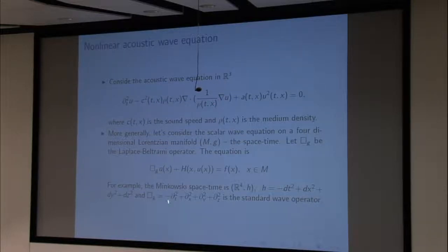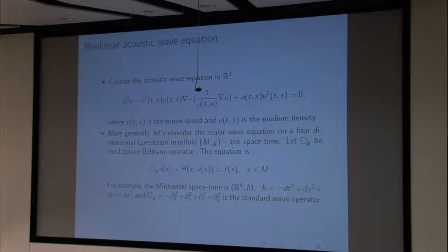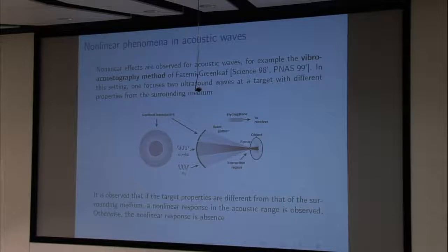More generally, we can consider a scalar wave equation on a Lorentzian manifold. For the linear part we can find a Lorentz metric, so it is useful to consider this scalar wave equation on a Lorentzian manifold M with metric g. If you are not familiar with this, you can take M to be Minkowski spacetime, which is just R⁴ with the standard metric. The box_g operator is the Laplace-Beltrami operator replacing the linear wave operator, and we replace the quadratic nonlinear term with a general smooth function h(x, u). The source term f is supposed to generate the wave.